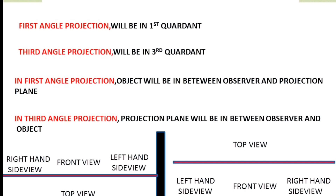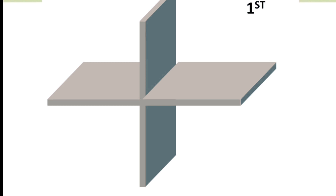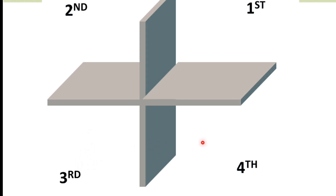Now we understand this very easily by the quadrants. We have four quadrants: first, second, third, and fourth. If any object lies in the first quadrant, then this will be first angle projection. If it lies in the second quadrant, it will be second angle projection. If it lies in the third quadrant, it will be third angle projection. And if the object lies in the fourth quadrant, it will be fourth angle projection. We are discussing first angle and third angle projection.